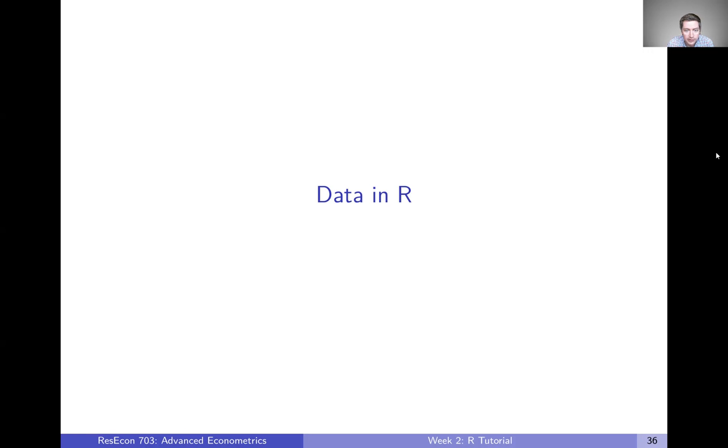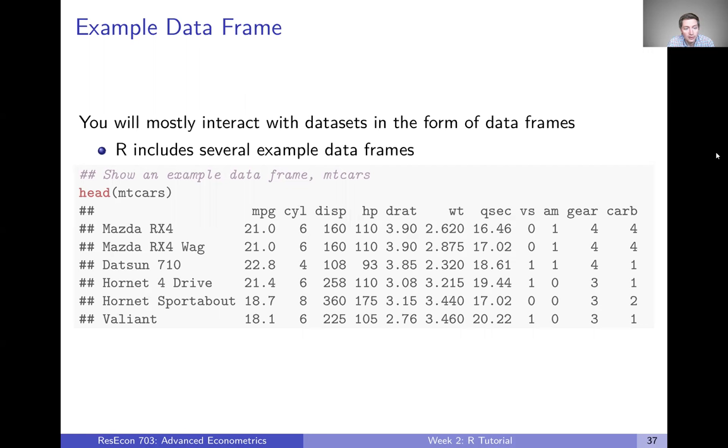In this last lecture video for the week, we're going to talk about how you're most likely to interact with R, which is using datasets and some of the functions and functionality in R to manipulate and analyze data. R includes several different example data frames that you can use to see what's going on. One of them is this dataset called MT cars, which gives us some information about cars.